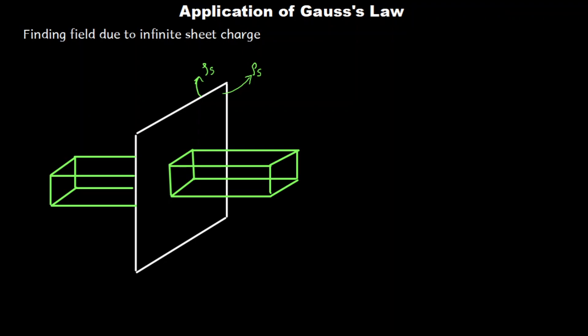Taking the idea from the previous discussions, since the distribution of charges is uniform throughout the sheet of charge, the electric field will be perpendicular to its surface. That means my electric flux density vectors — the D vector — will be coming out normally from the sheet. Let me mark point P on the surface of the Gaussian surface.